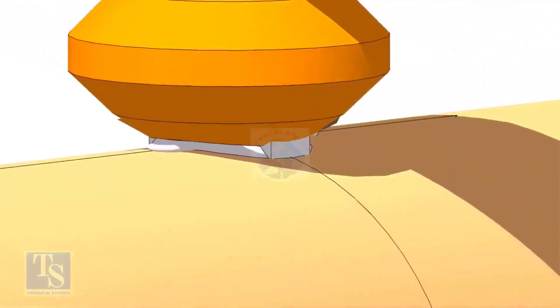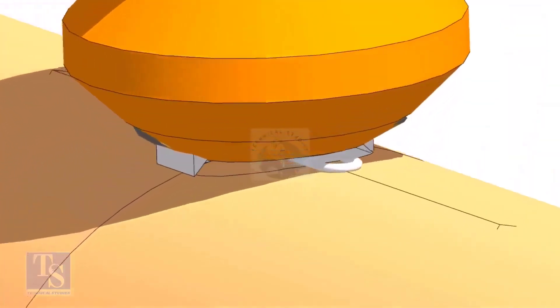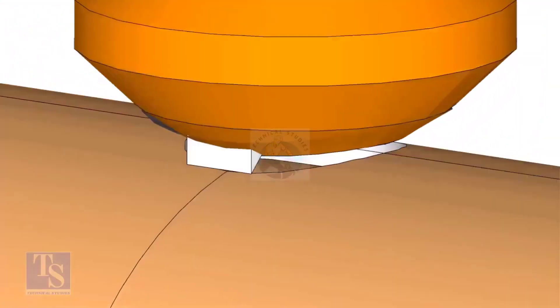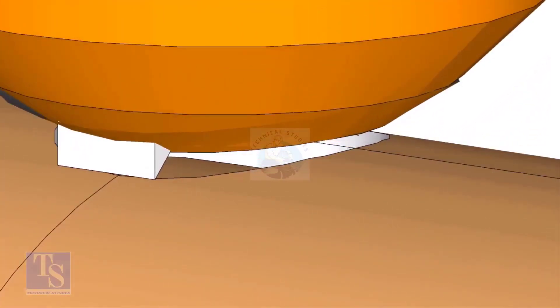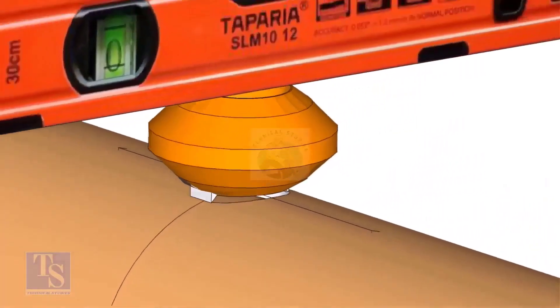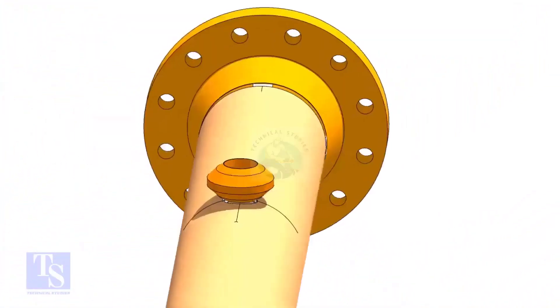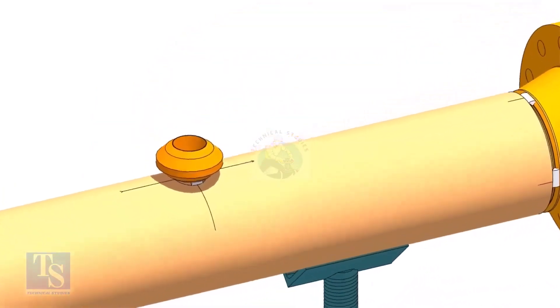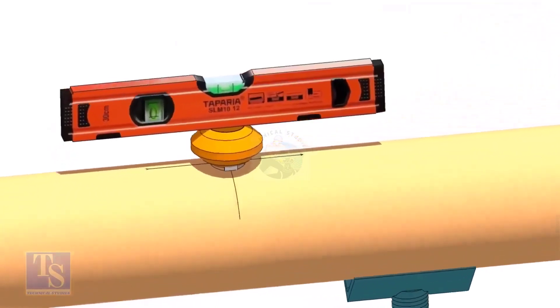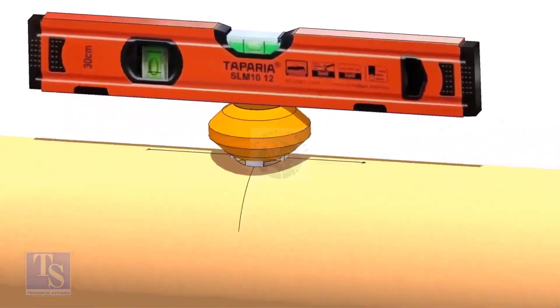Remove the gap rod. Check the level again. If the level is correct on both ways, tack weld on the longitudinal side.